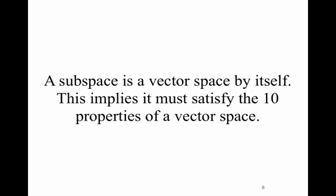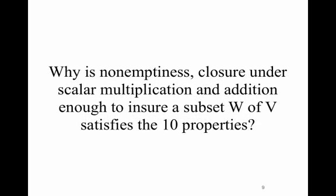A subspace is a vector space by itself, and this implies that it too must satisfy the 10 properties of a vector space. If you think about it, you might ask yourself: why is non-emptiness, closure under addition, and closure under scalar multiplication good enough to ensure that the subset W of V satisfies the 10 properties? Think about that on your own. Non-emptiness, closure under scalar multiplication, and closure under addition are enough to ensure that those 10 properties are satisfied on the subset W.